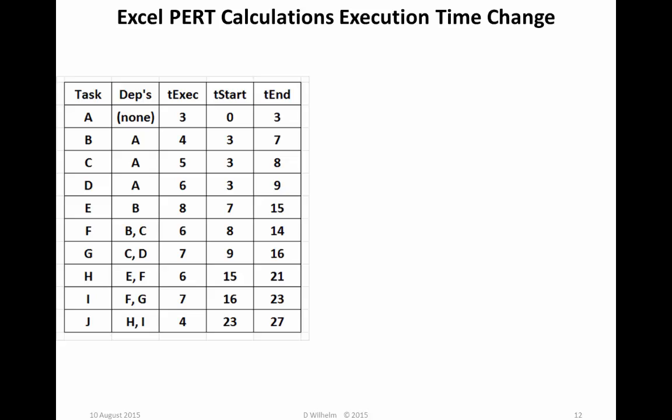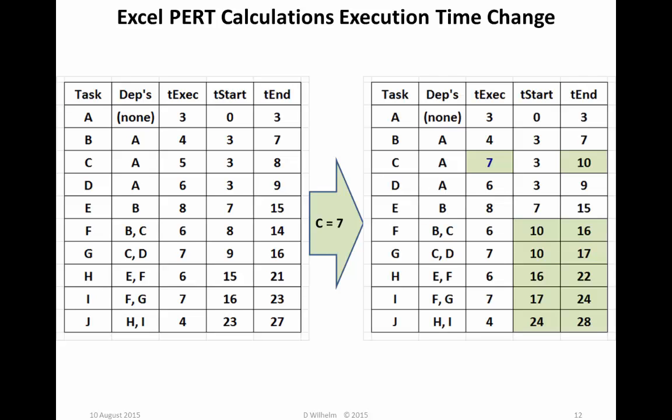Well, we've got it. So what? Well, one actual advantage over the Excel spreadsheet version of PERT charting is that we can change the execution times of any of the tasks, and they will automatically roll through the rest of the formulas to show us what has changed. In this case, if we change the execution time of task C from 5 to 7, the end time of task C will change, plus all the start and end times of tasks F through J, and the total cumulative elapsed time will now be 28.